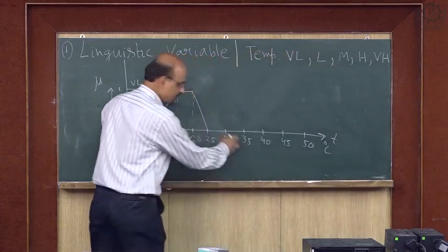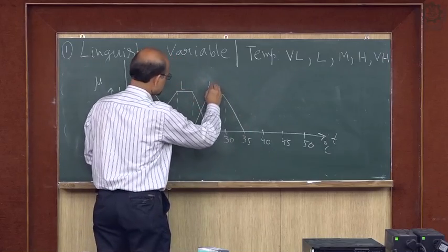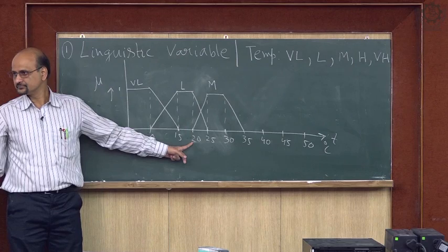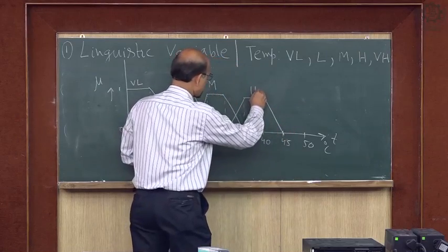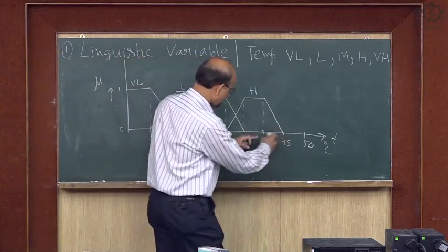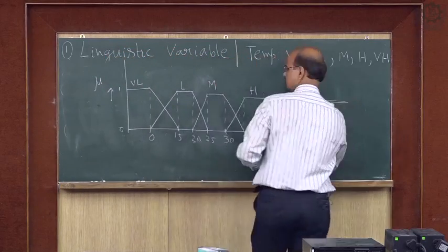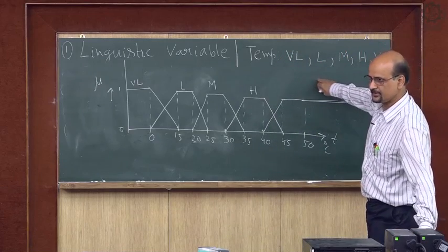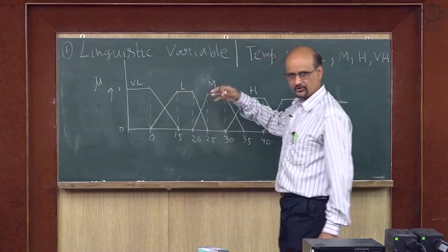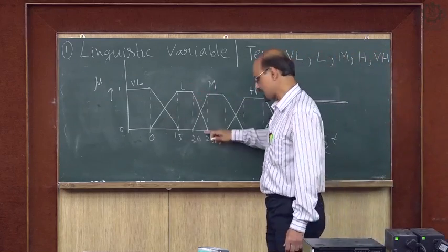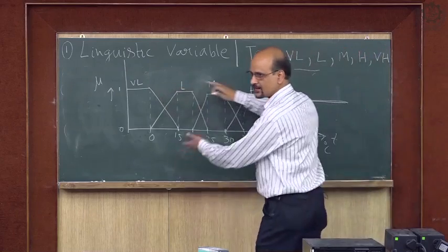Medium temperature I can have from 20 to 35. High temperature I can have from 30 to 45. Very high temperature I can have from 40 and above. So you see, this linguistic variable temperature, with values very low, low, medium, high, very high, can have representations like trapezoidal shapes. I will do this in greater detail afterwards. These are trapezoidal; I can have triangles or other shapes also. These linguistic variables can be designated as fuzzy sets.